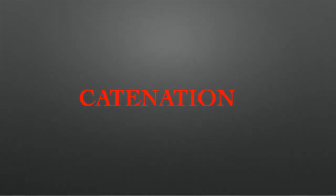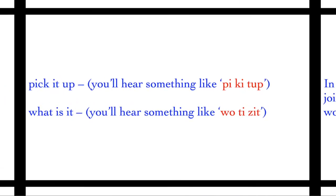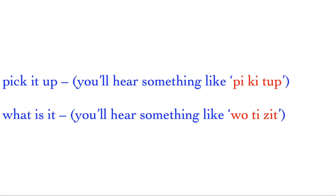Catenation. In catenation, the last consonant of the first word is joined to the vowel sound at the start of the second word. For example, 'pick it up' - you will hear something like 'pickit up'. 'What is it?' - we don't say that, we will hear something like 'what izzit?'